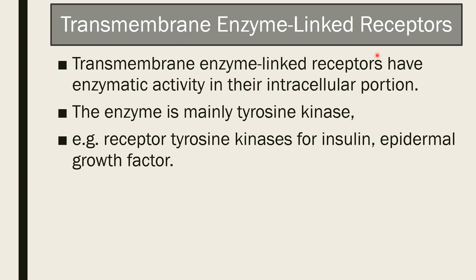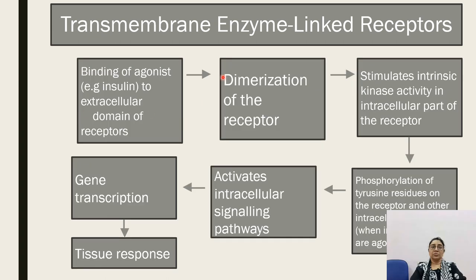Transmembrane enzyme-linked receptors have enzymatic activity in their intracellular portion. The enzyme is mainly tyrosine kinase — receptor tyrosine kinase — for insulin and epidermal growth factor. The mechanism involves binding of the agonist, such as insulin, to the extracellular domain. Dimerization of the receptor stimulates intrinsic kinase activity, leading to phosphorylation of tyrosine residues and other intracellular proteins, activating intracellular signaling pathways and gene transcription, resulting in a tissue response.